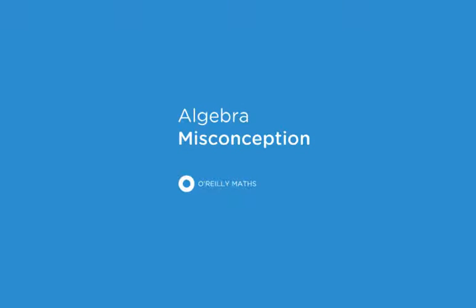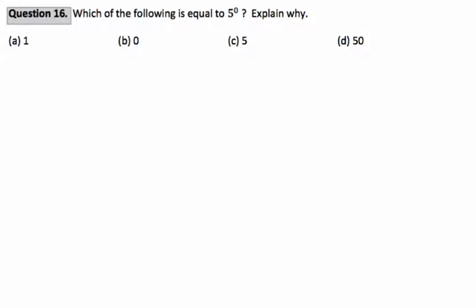Welcome to Riley Maths and this is video number 16 from the Algebra Misconceptions series of videos. The question reads: which of the following is equal to 5 to the power of 0? Explain why. There are four options: 1, 0, 5, or 50. Pause the video and try this question now.